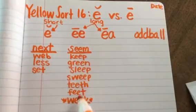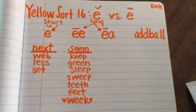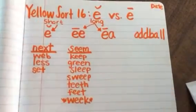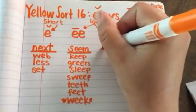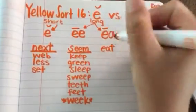Oh, just a reminder: the two E's says E. The E-A also says E. Let's look at our anchor word: E-A-T, eat.